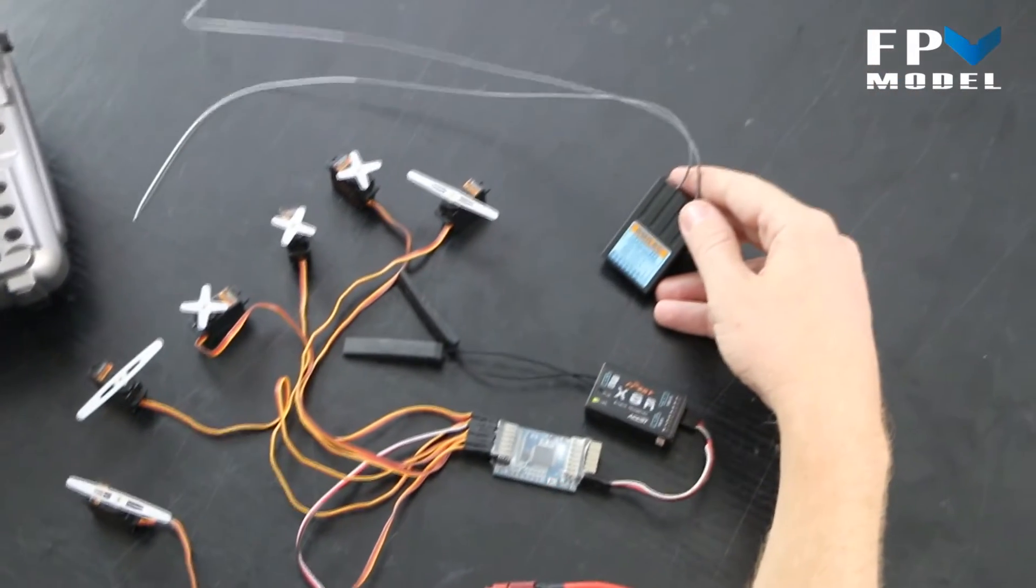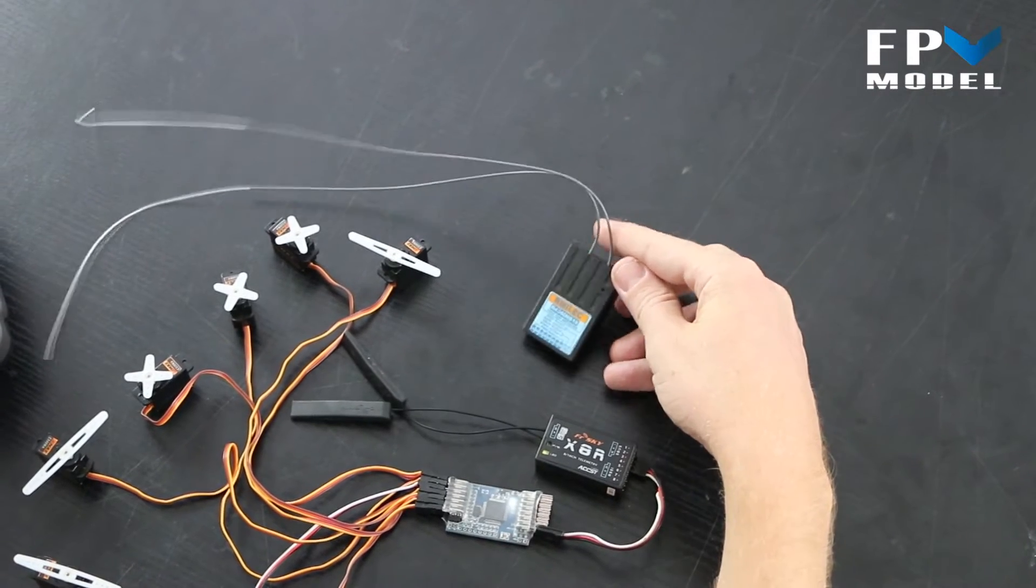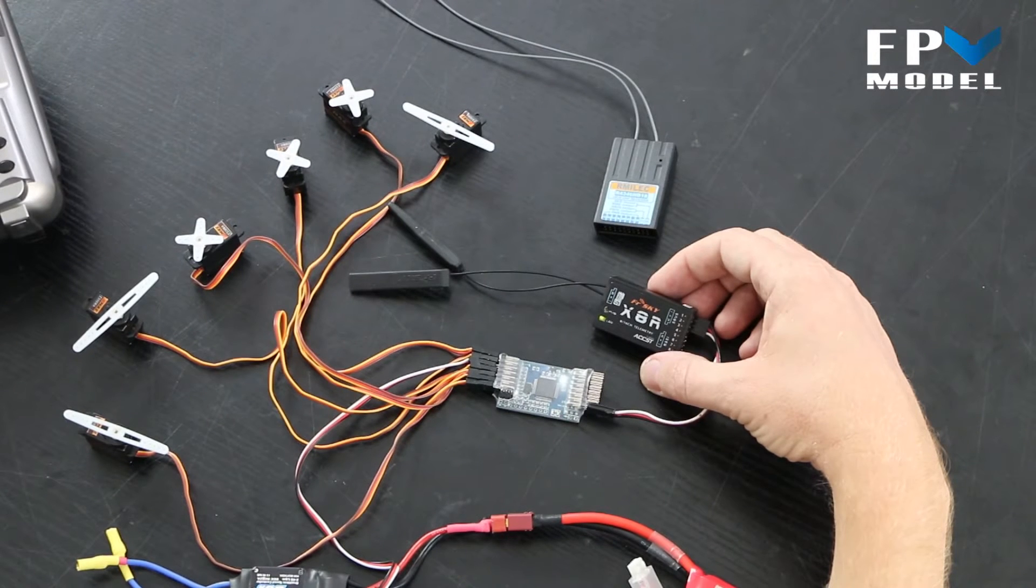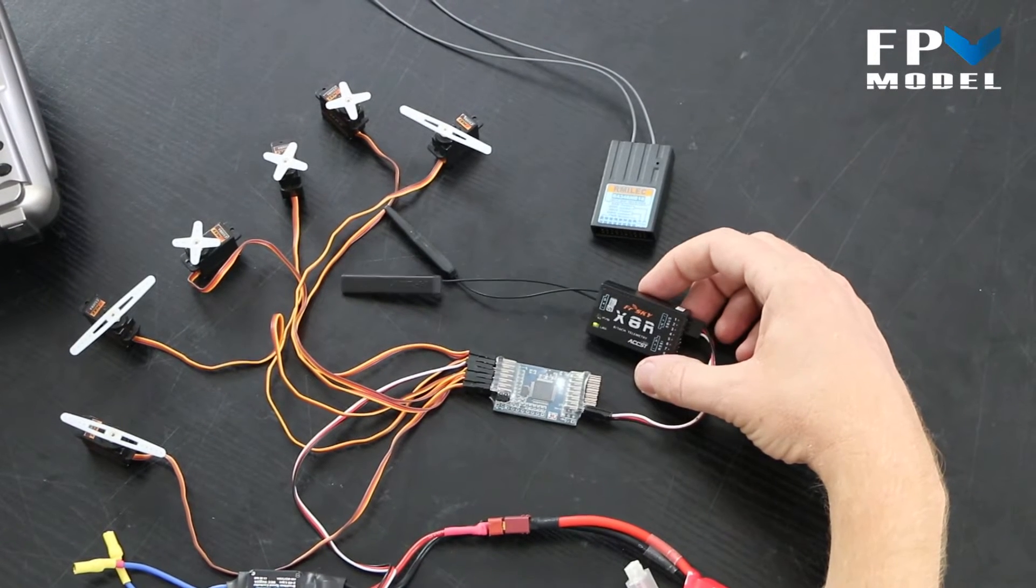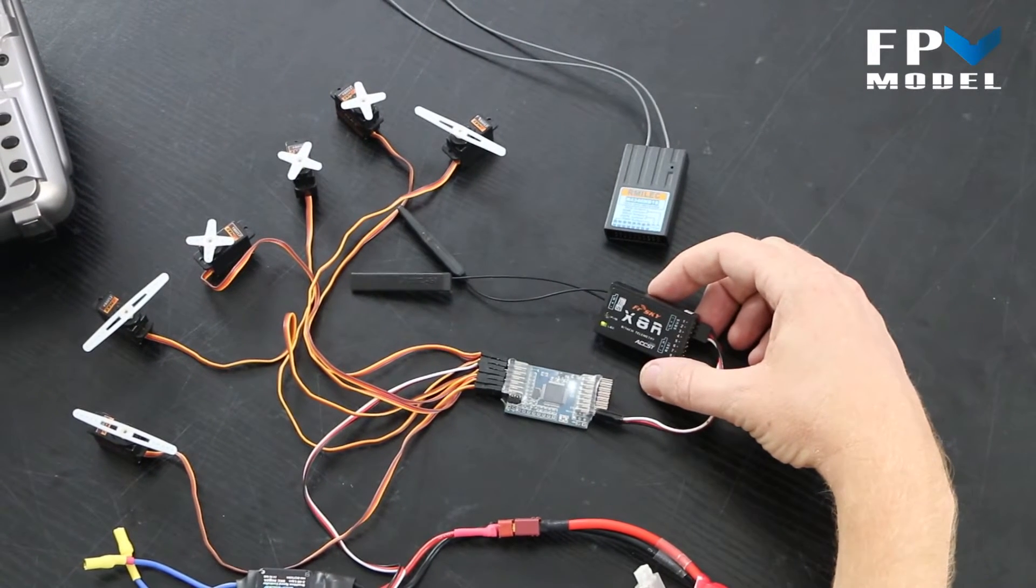This is R-Mile C receiver good for 20 kilometers and plus depending on your antennas. This is the FrySky X8R. It only gets about a kilometer range but this isn't to increase your distance, it's just merely to increase your channels.